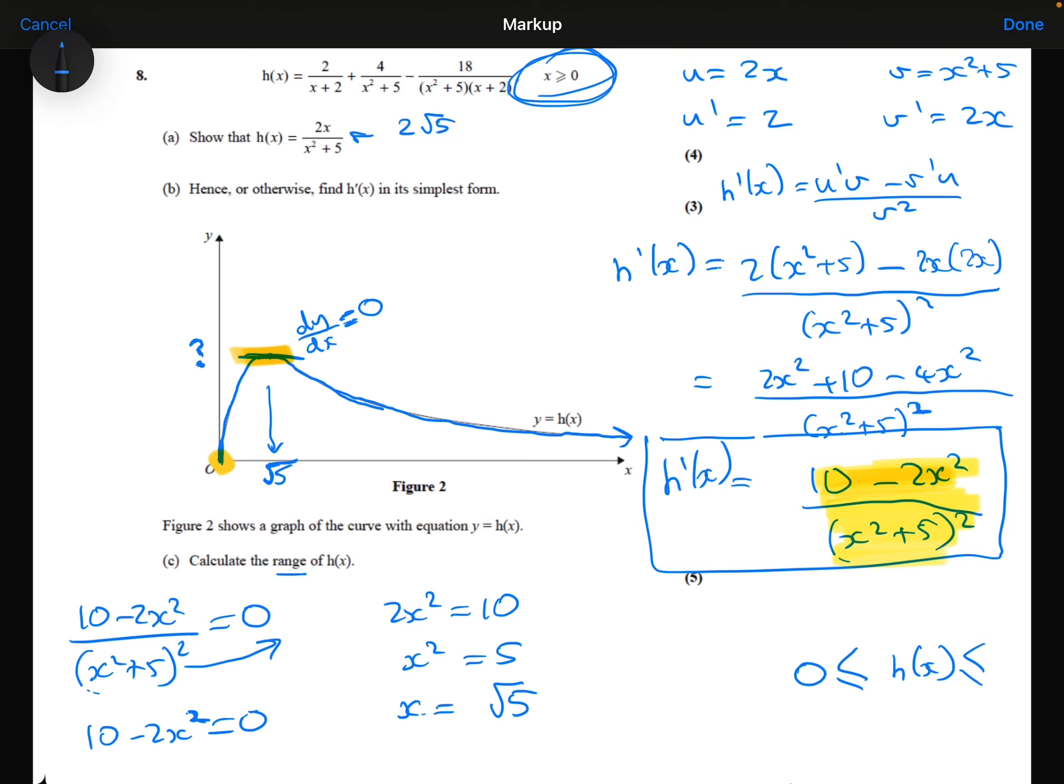So 2 root 5 over root 5 squared plus 5 is 2 root 5 over 5 plus 5. So 2 root 5 over 10 or root 5 over 5. So root 5 over 5 is the maximum y coordinate.